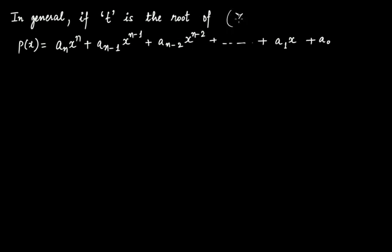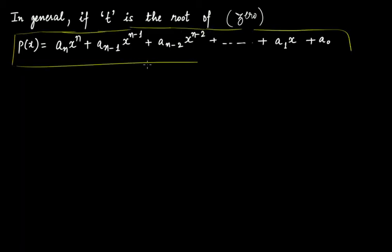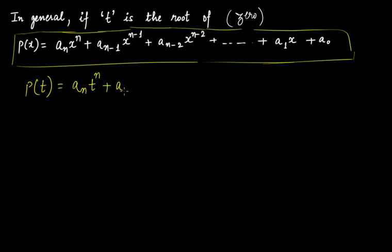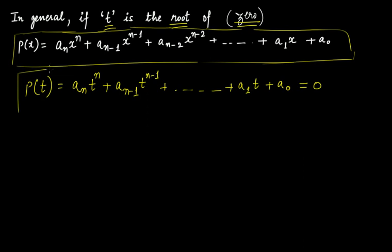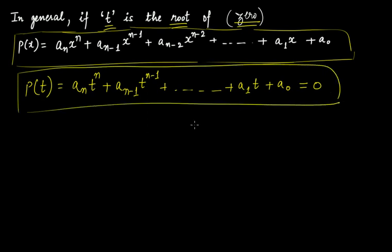In general, if t is the root or zero of a polynomial px equal to an·x to the power n plus a(n−1)·x to the power n−1 and so on up to a1·x plus a0 — which is the standard way to express a polynomial of nth degree — then substituting t in place of x gives an·t to the power n plus a(n−1)·t to the power n−1 up to a1·t plus a0 equal to 0.